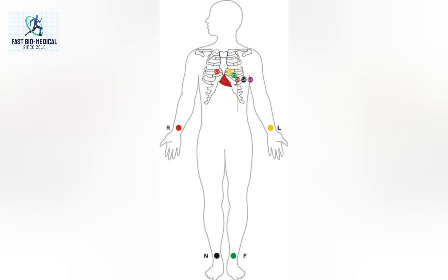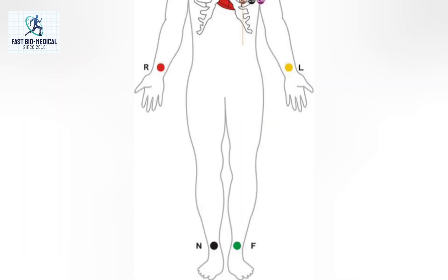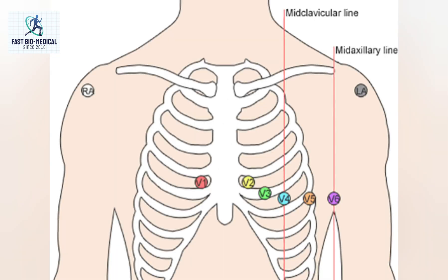R is connected to the patient's right arm, L is connected to the patient's left arm, N is connected to the patient's right leg, and F is connected to the patient's left leg to take the acquisition. The chest electrode is connected to the patient's chest to take the acquisition.